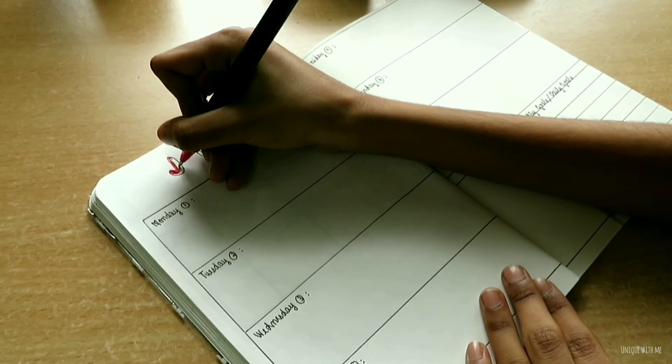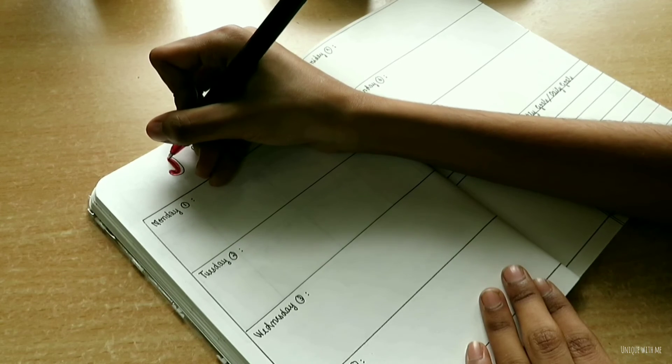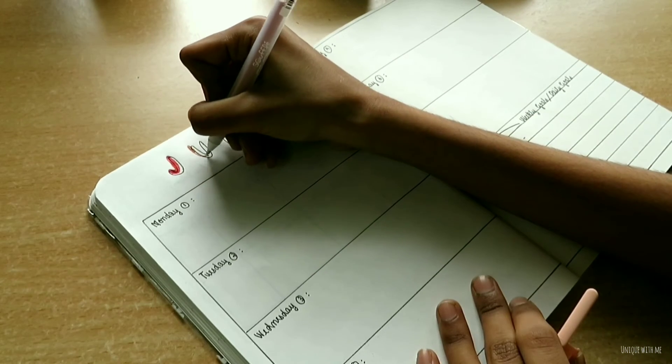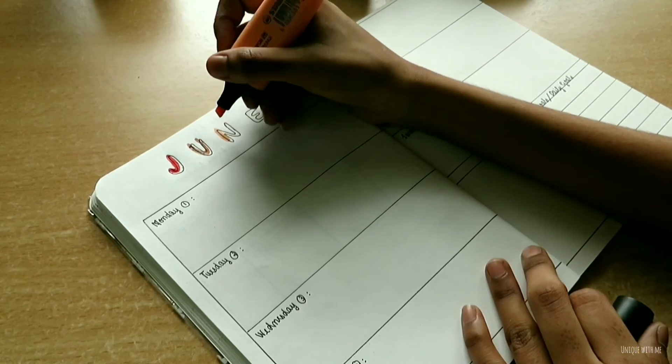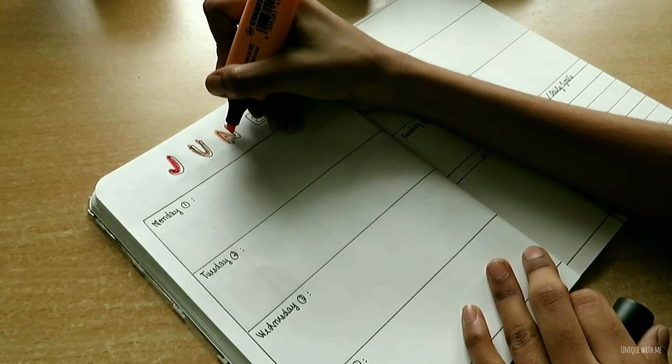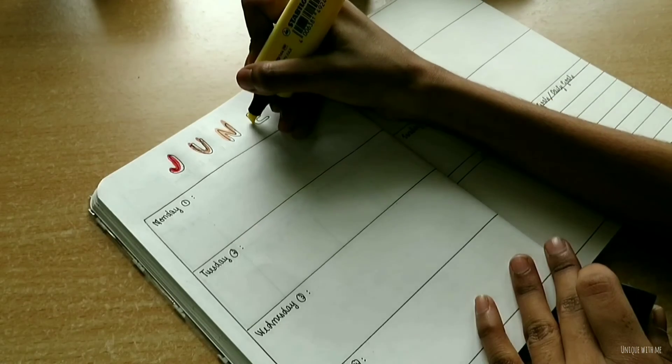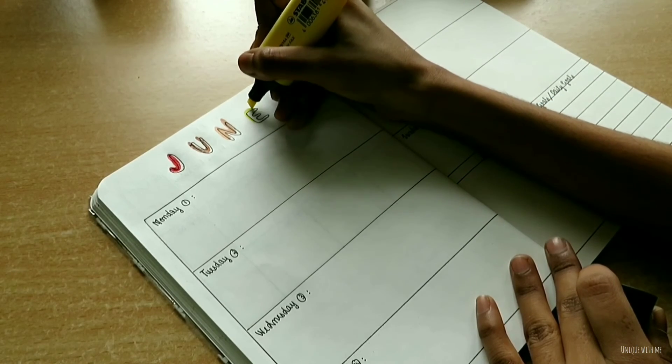You can definitely skip it if you don't want to, but if you have a little extra time, you can go for it and your planner will be colorful. I added in color for the title, that is June, and the date.